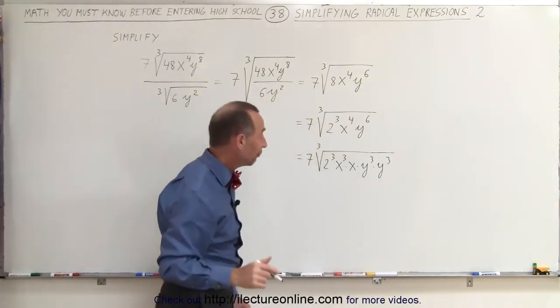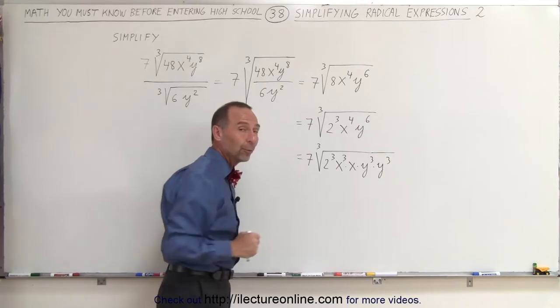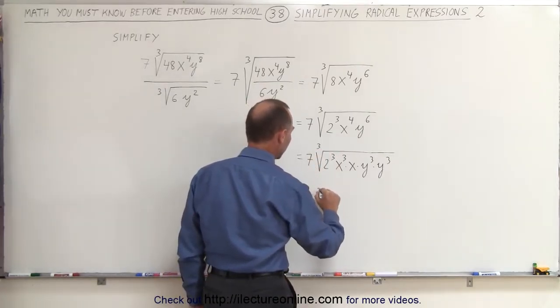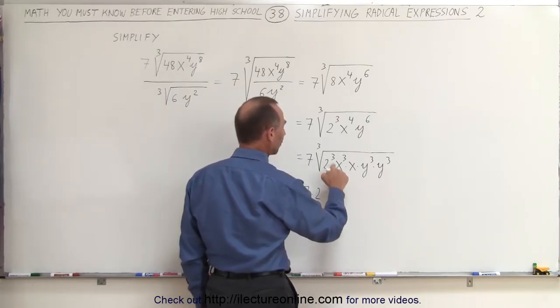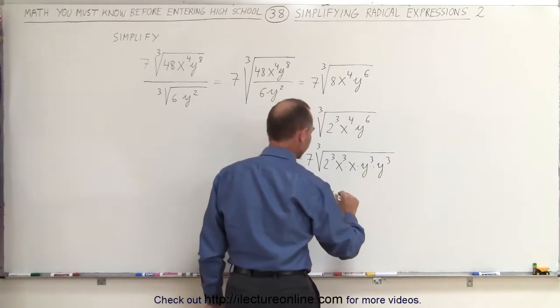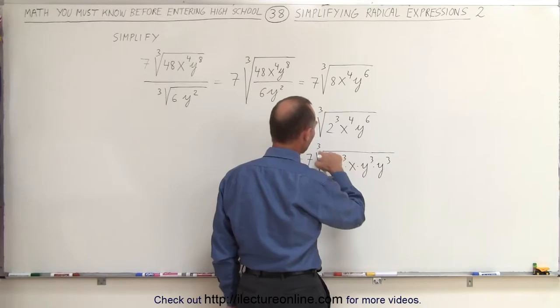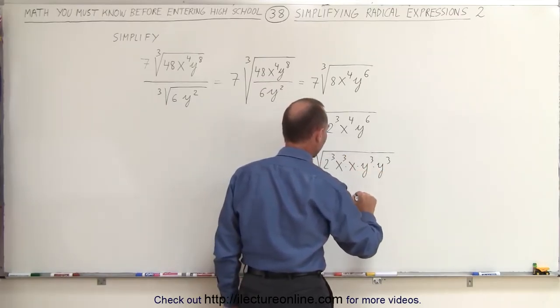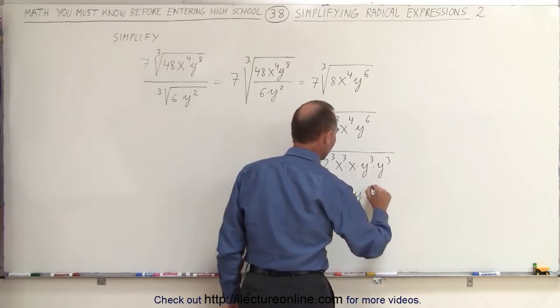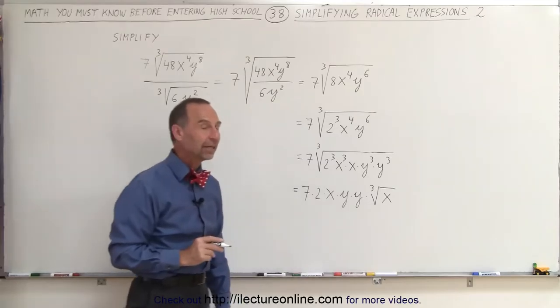The reason why we wrote it in that form is that if we have the cube root of something cubed, that can come outside the radical symbol. So this can be written as 7 times: Pull out the 2, pull out an x, pull out one y and pull out another y. All we have left is the cube root of x.